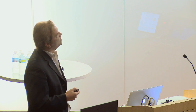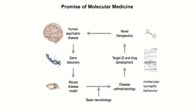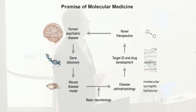This is really the promise of molecular medicine. You have a human neurological or psychiatric disease, find the gene associated with it, make a mouse model, and then do basic neurobiology and disease pathophysiology at the molecular level, the synaptic level — where neurons communicate — and at the behavioral level. Based on what we know about basic neurobiology, we try to identify molecular changes. If we know the molecular basis, we can use targeted drug development to produce novel therapeutics that go back into the clinic.